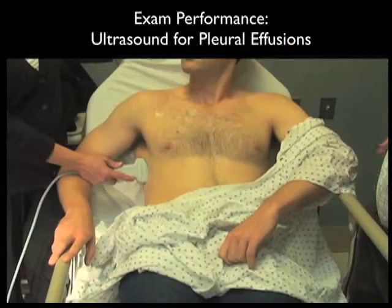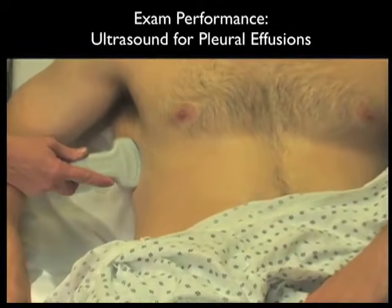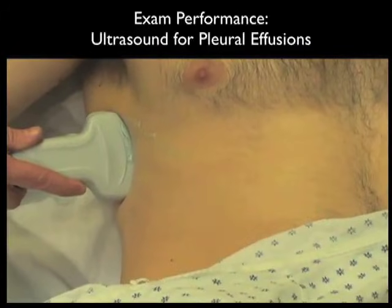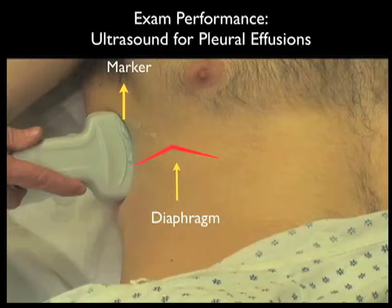Before performance of a thoracentesis procedure, it's mandatory to look with sonography to make sure that there's enough pleural fluid amenable for a safe thoracentesis. Notice here we have the patient positioned in an upright position so that the fluid will layer out above the level of the diaphragm. Notice here we note the diaphragm as shown by the red line across the patient's anterior chest wall. Notice here we have the probe positioned along the lateral aspect of the patient's chest with a marker dot towards the patient's head.